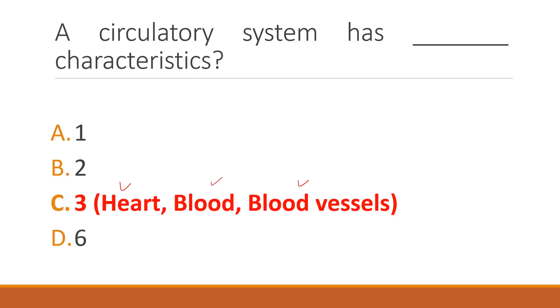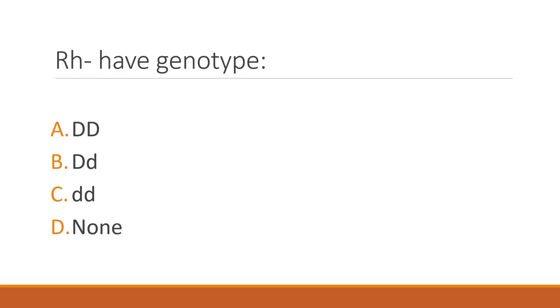What is the Rh negative genotype? The correct answer is option C: small d and small d (homozygous recessive).